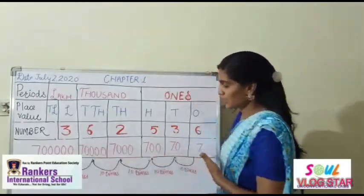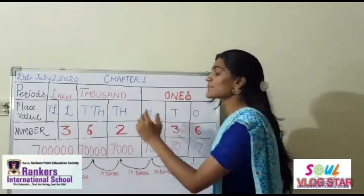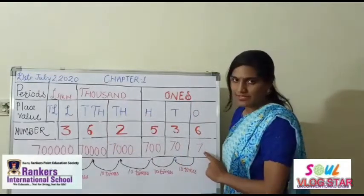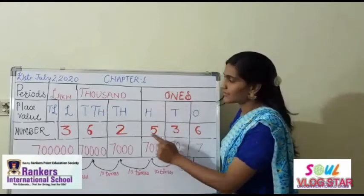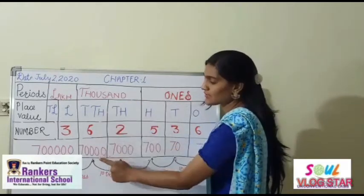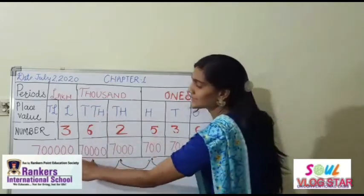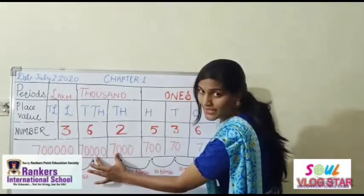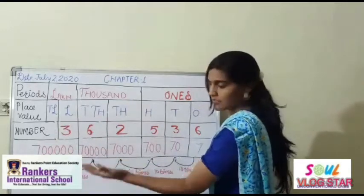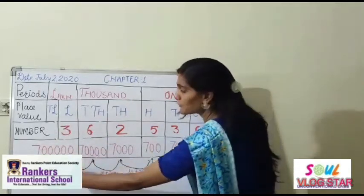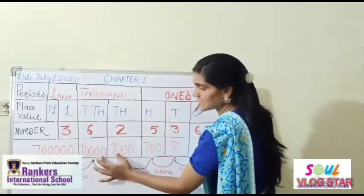Another example: I have written a number where every digit is 7. In expanded form it is: 7 ones, 70 at the tens place, 700 at hundreds, 7000 at thousands, 70,000 at ten-thousands, and 7 lakh. Combining from the left: 7 lakh, then 77,000. Reading the full number from left to right, it is 7,77,777.